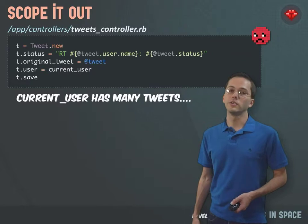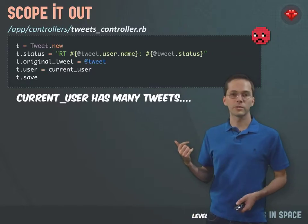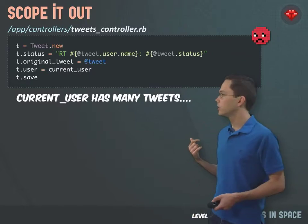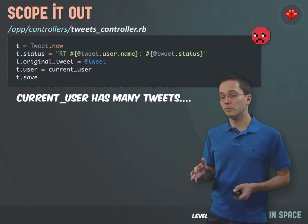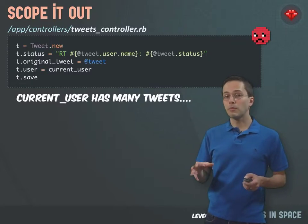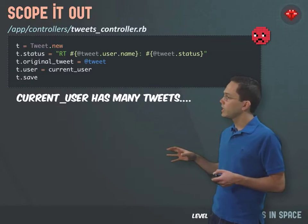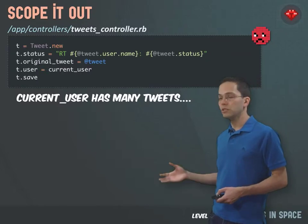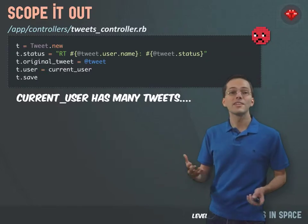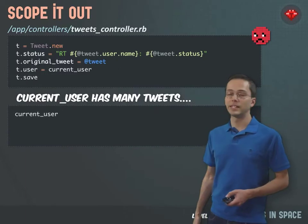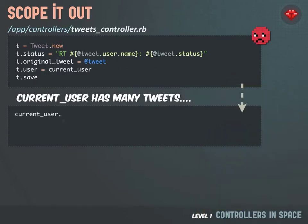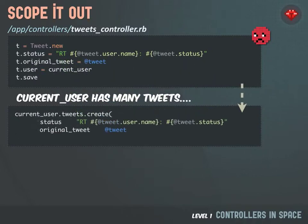Earlier in this video, you saw some code where we're creating a retweet. We can improve this code by properly using scope. We're creating a retweet for a particular user, so why not scope it to that user? We might have code that instead looks something like current_user.tweets.create and then we send in the parameters.